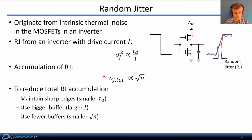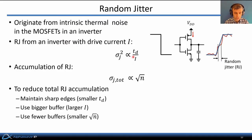Since the jitter introduced by each inverter in a chain is independent, random jitter accumulates in a sum-of-squares fashion — so total RMS jitter in a chain of inverters is proportional to the square root of the number of inverters. Design guidelines to reduce RJ accumulation include: maintain sharp edges (since jitter is proportional to rise and fall times), use bigger stronger buffers so that current I is larger, and use fewer buffers. The general trend is towards fewer and larger buffers with sharp rise and fall times.